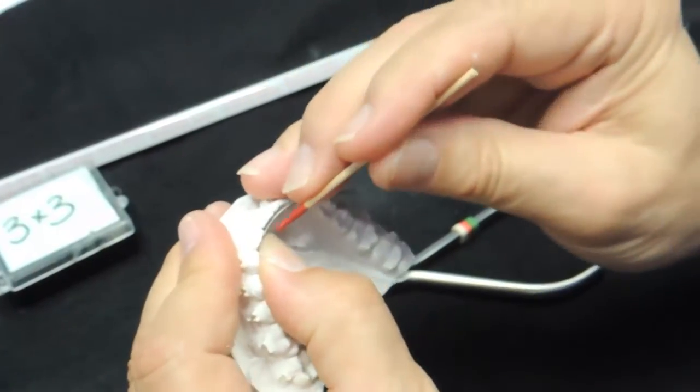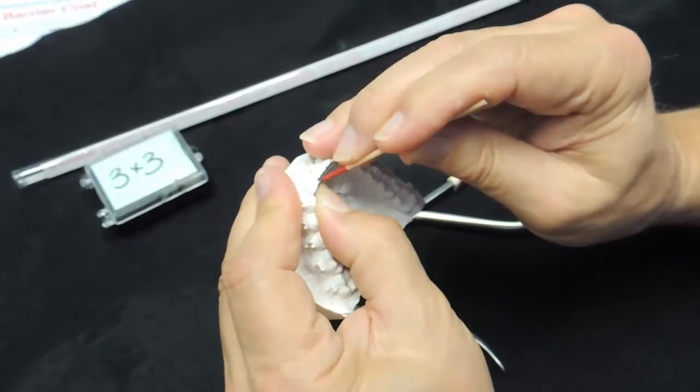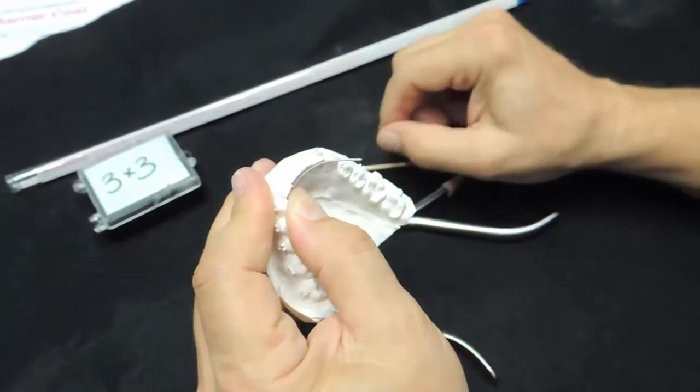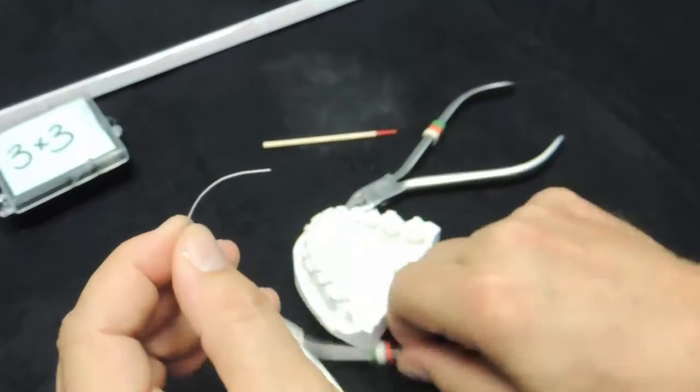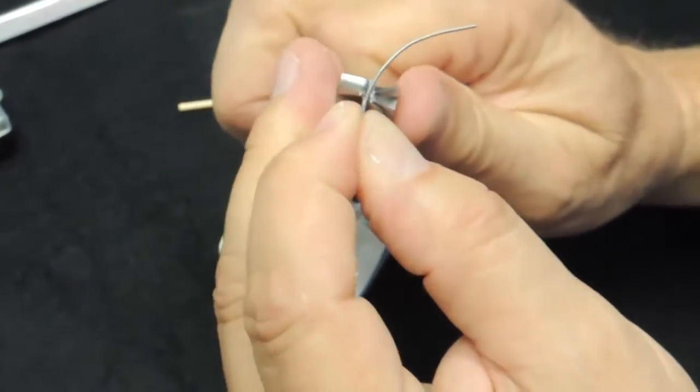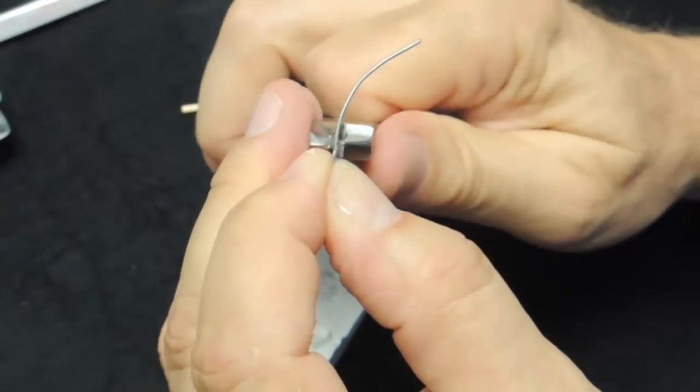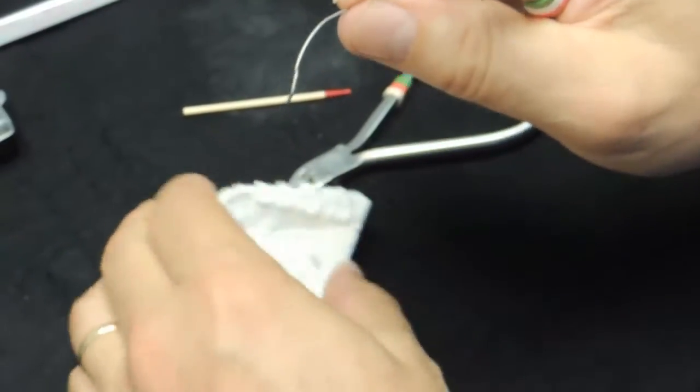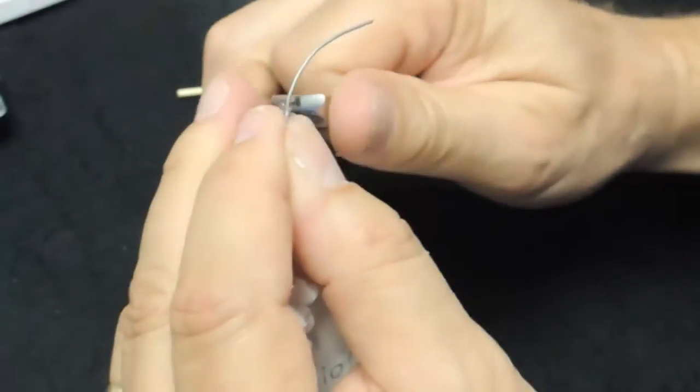Sometimes I need to make offset bends for the laterals. That doesn't happen all the time, but I'll make a mark where I need to make a little offset bend for the lateral, and I'll take a 3 beak and make a little bayonet type bend here in and out, just so it adapts better to the model.